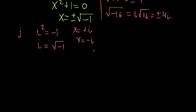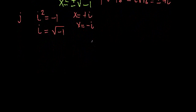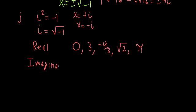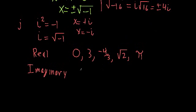When we start dealing with the imaginary unit, we need to classify numbers. One class is real numbers — numbers that don't have any imaginary unit term. So 0, 3, negative 4/3, radical 2, and pi are all real numbers. We can also define imaginary numbers — numbers that are multiplied by the imaginary unit. So plus or minus 4i and 7/4 i are imaginary; they all have this i term.